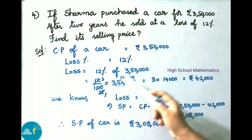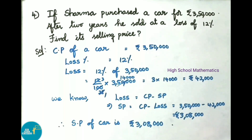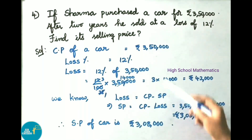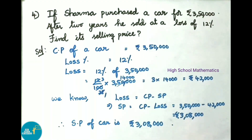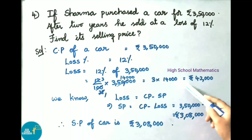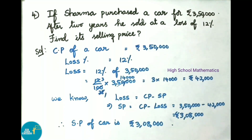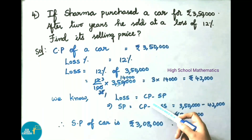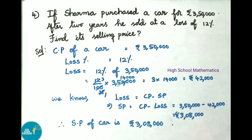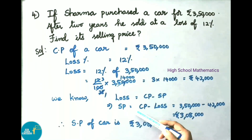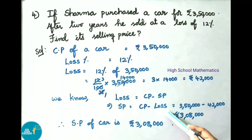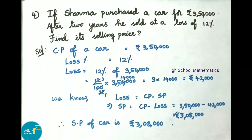Loss equals 12 percent of 3,50,000, that is 12 by 100 into 3,50,000. Simplifying gives 42,000 rupees. We know loss equals cost price minus selling price, so selling price equals cost price minus loss. That equals 3,50,000 minus 42,000 rupees, which gives 3,08,000 rupees. Therefore selling price of car is 3,08,000 rupees.